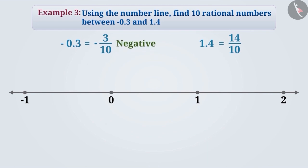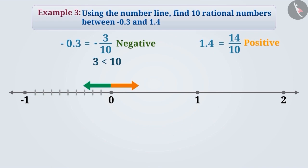Minus 3 by 10 is a negative rational number, so its position is to the left of 0, but 14 by 10 is a positive rational number, so its position is to the right of 0. Ignoring the minus sign of minus 3 by 10, we see that the numerator 3 is smaller than its denominator 10. So, the position of minus 3 by 10 is between 0 and minus 1. To find the exact position, we divide the distance from 0 to minus 1 into 10 equal parts, take the first 3 parts to the left of 0, and mark it minus 3 by 10.